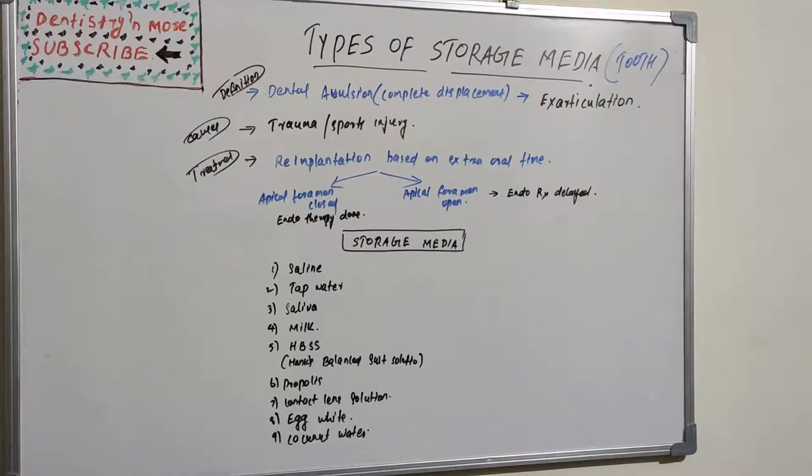What are the storage medias available and what are the properties of the storage media? Basically, a storage media should have antimicrobial properties, it should maintain the viability of the periodontal fibers, it should favor the proliferative capacity of the cell, it should have same osmolarity as that of body fluids, it should not produce any antigen-antibody reactions, it should reduce the risk of post-implantation root resorption or ankylosis, and it should have good shelf life.